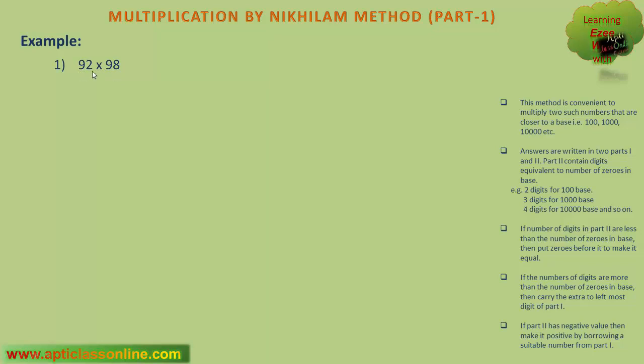As I have said, these methods are conveniently applied to numbers which are closer to a base. So first of all we have to find out to which base the numbers are closer to. Here, we see that both these numbers are closer to 100, so the base is 100. The next thing that we have to do is to find out that 92 is how much less than its base, that is 100. We see that 92 is 8 less than 100, and 98 is 2 less than 100.